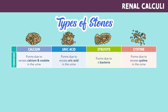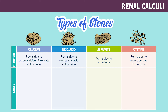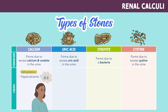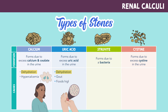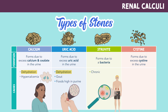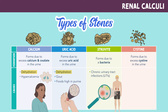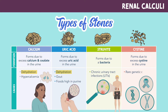Now, some causes of these specific stones. Calcium stones are caused by dehydration or hypercalcemia. Uric acid stones are caused by dehydration, gout, or foods high in purines. Struvite stones are caused by a chronic urinary tract infection, or UTIs. And cysteine stones are caused by a rare genetic disorder.